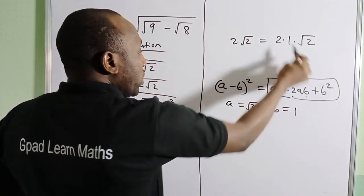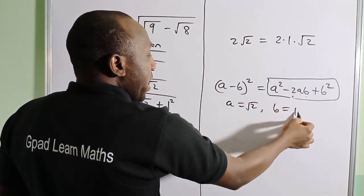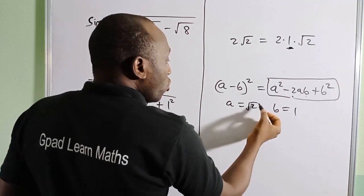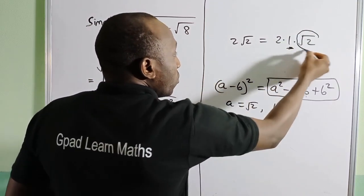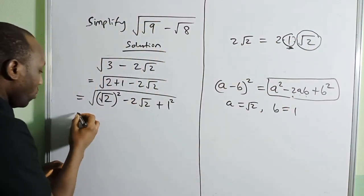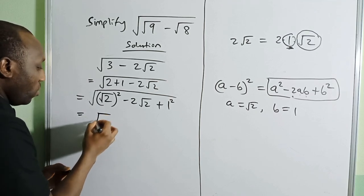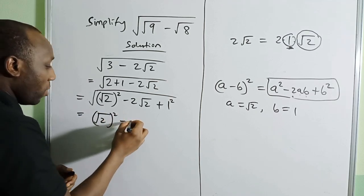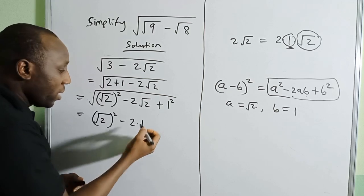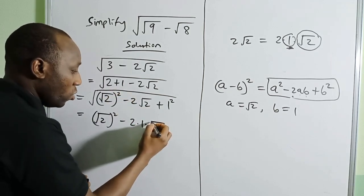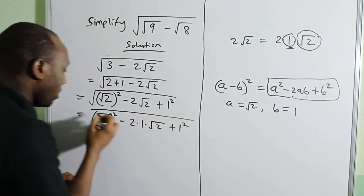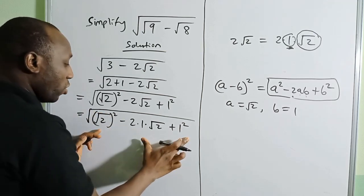What is a here? Remember we said a is √2 and b is 1. So I can rewrite this as √[(√2)² - 2·1·√2 + 1²], with the square root on it.